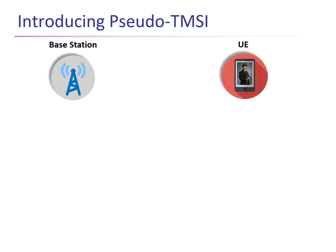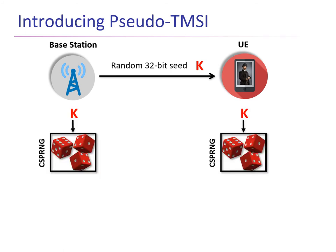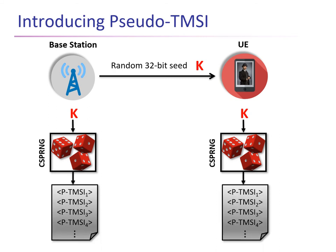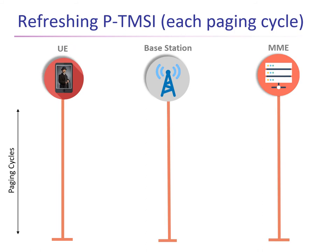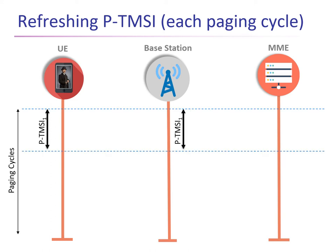To set up pseudo-TMZ, the base station sends a random 32-bit seed K during the attach procedure. Both the base station and the cellular device use this K and a cryptographically secure pseudo-random number generator to generate two identical lists of PTMZs. We propose two different strategies to update the PTMZ depending on the computational efficiency requirements. In the first approach, the PTMZ is refreshed after each paging cycle, whether or not an actual paging message is sent. As you can see, after every paging cycle the base station and the UE update their PTMZ values even though no paging message is sent during that cycle.